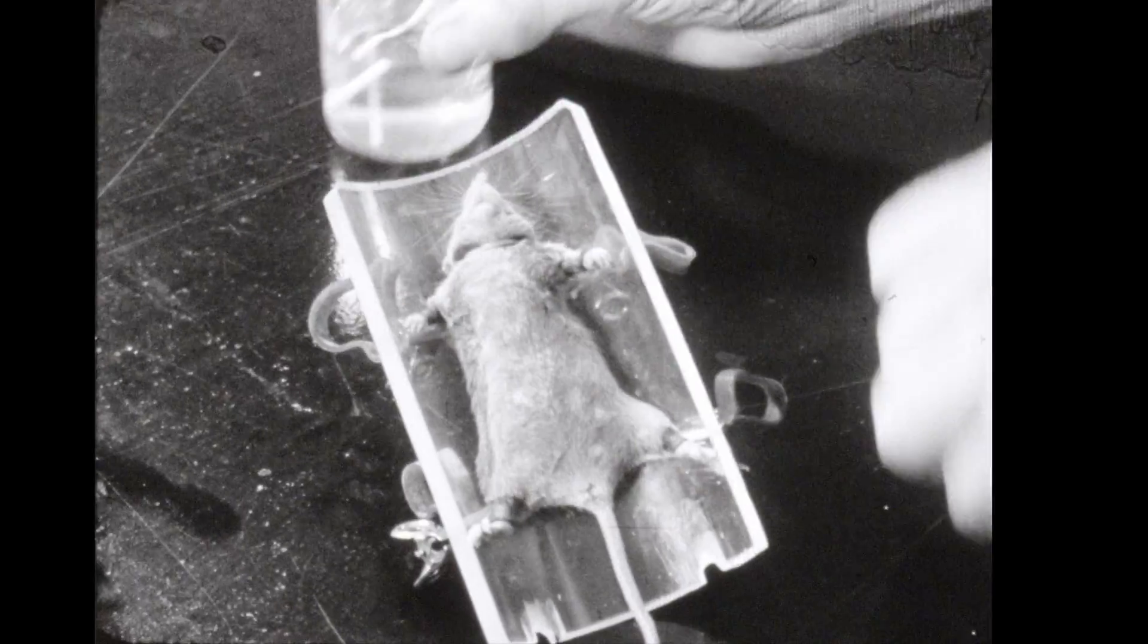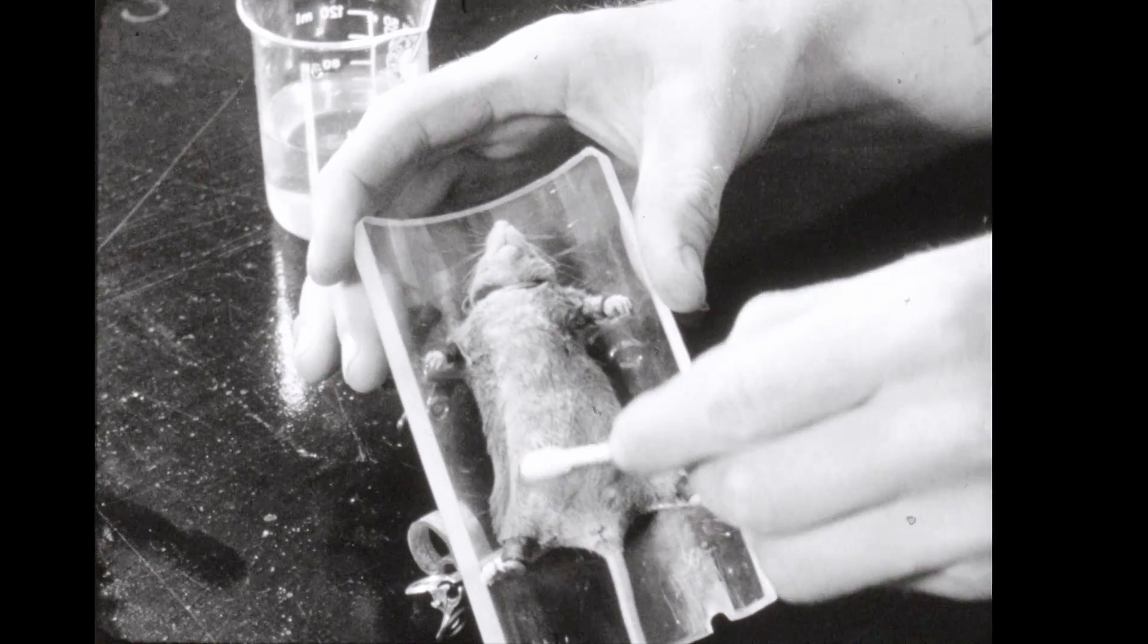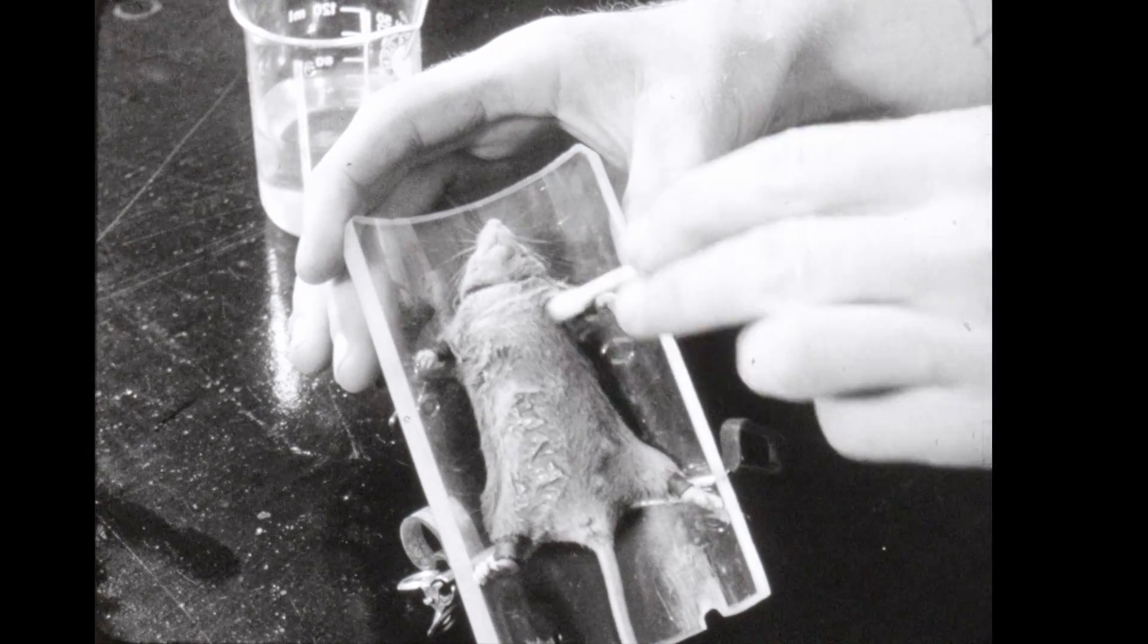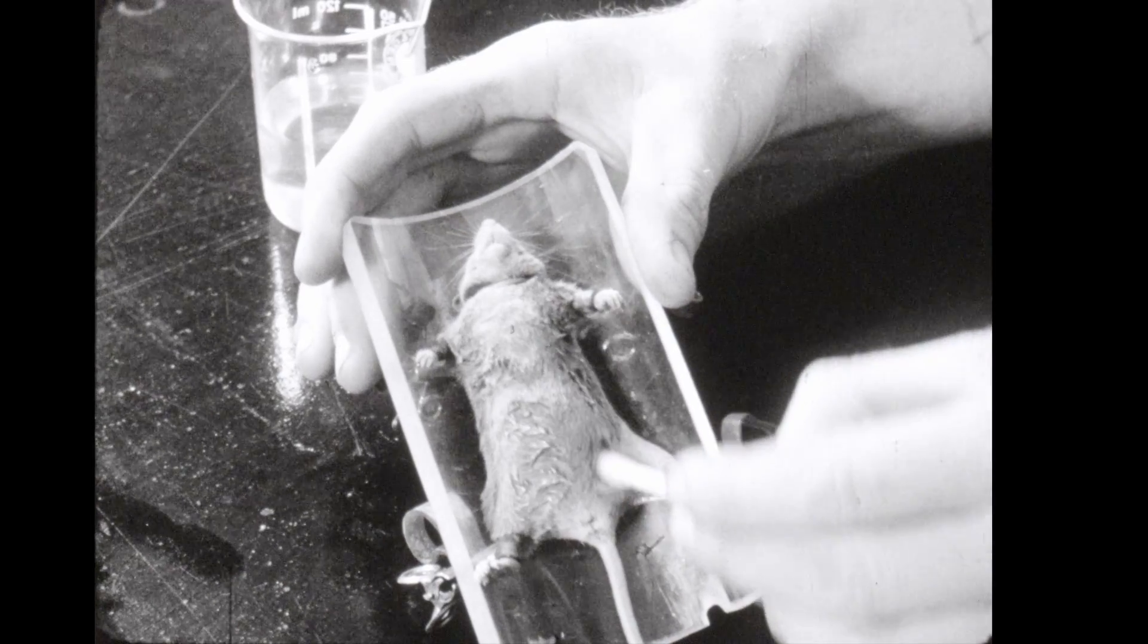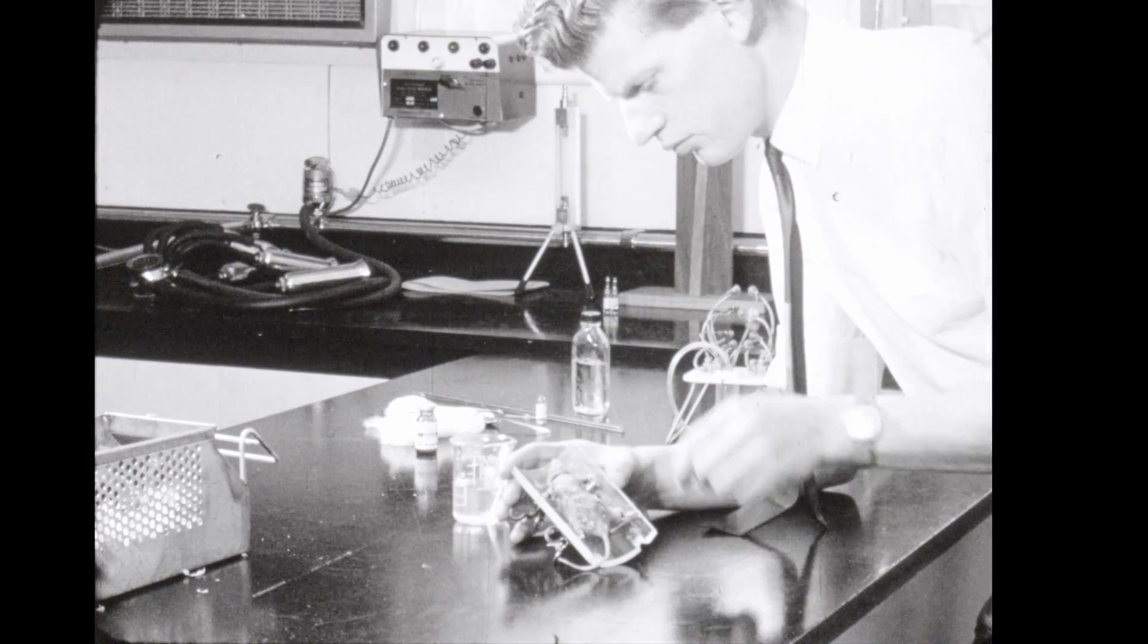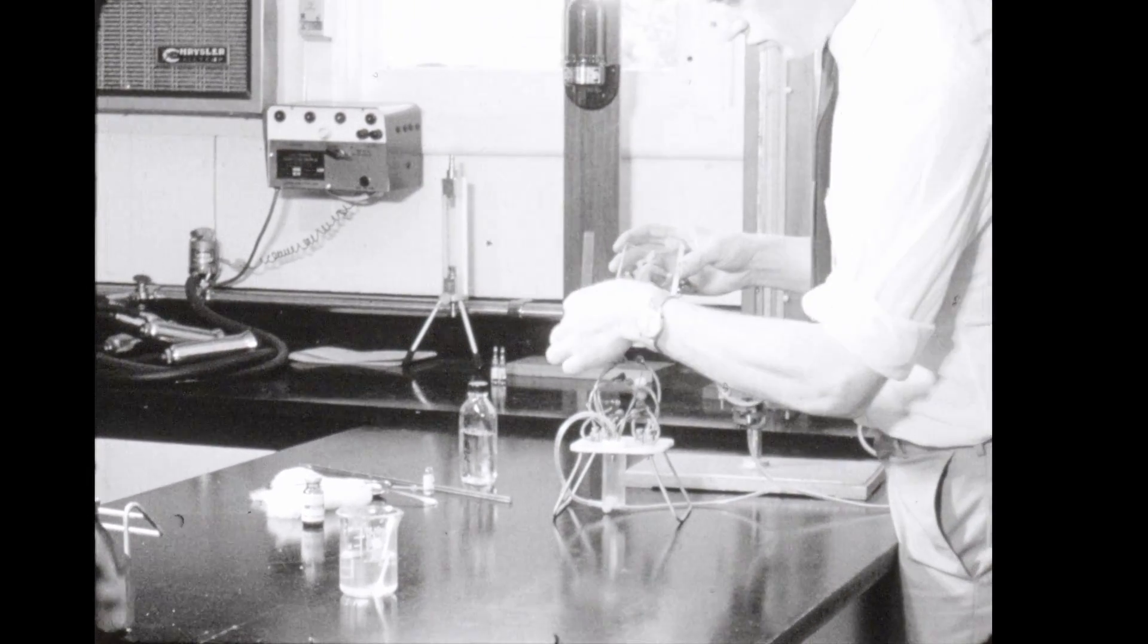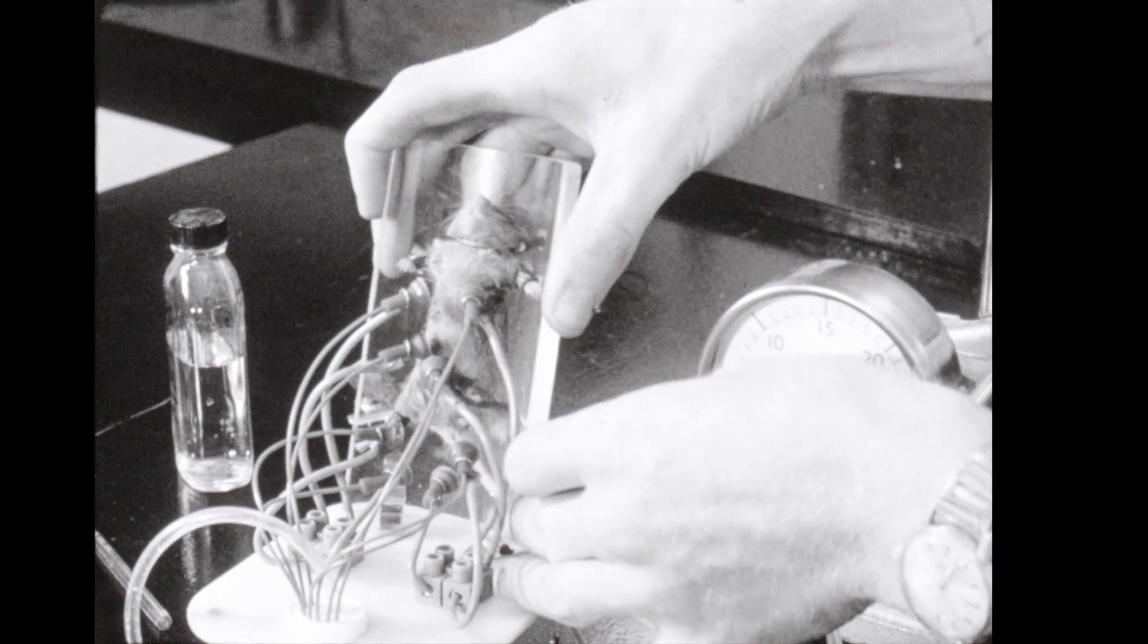The milk flow is stimulated when the ten nipples are rubbed with a swab stick containing sterile saline solution. The holder containing the mouse is then clipped vertically into the bale.